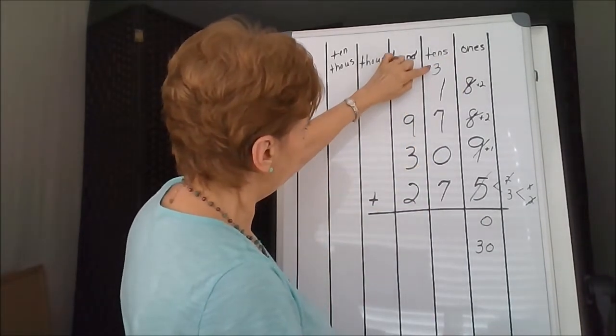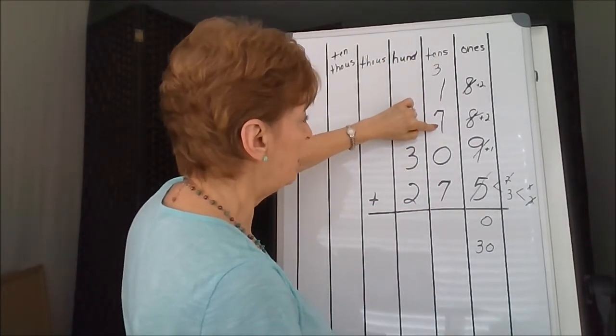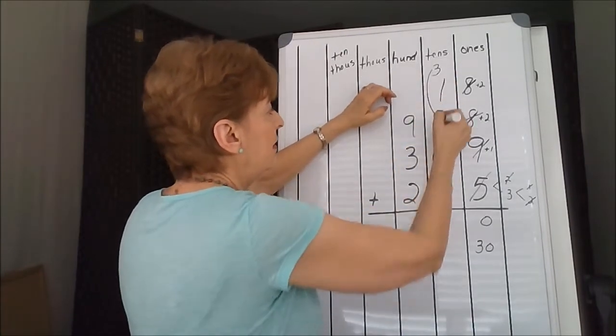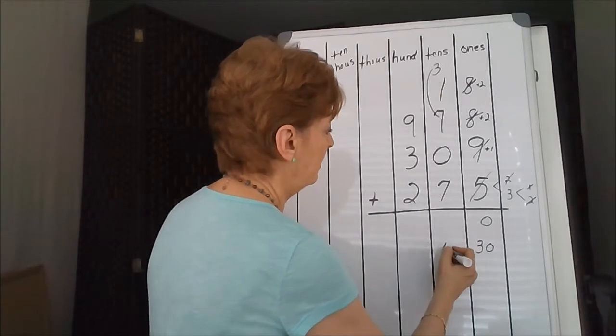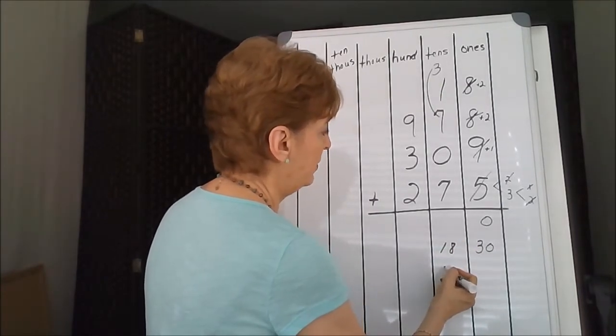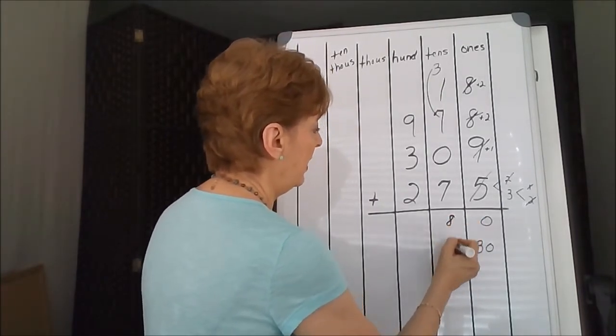Here I have 3 plus 7 gives 10. So we could go 17 and then 18. 18 is too large, so I'm going to use the 8 and carry the 1.